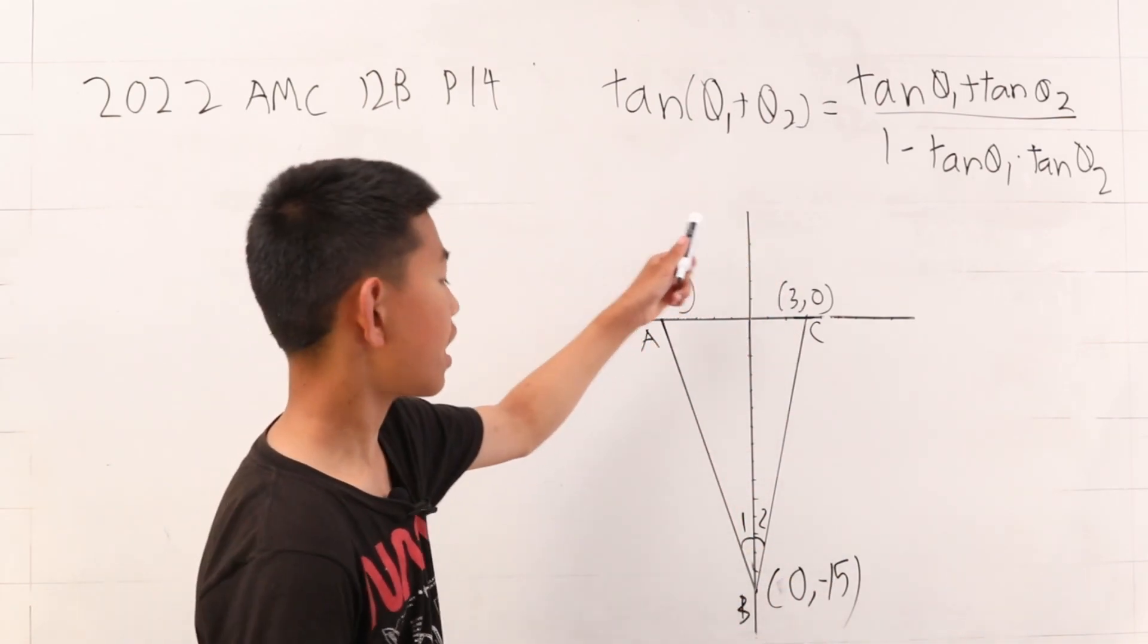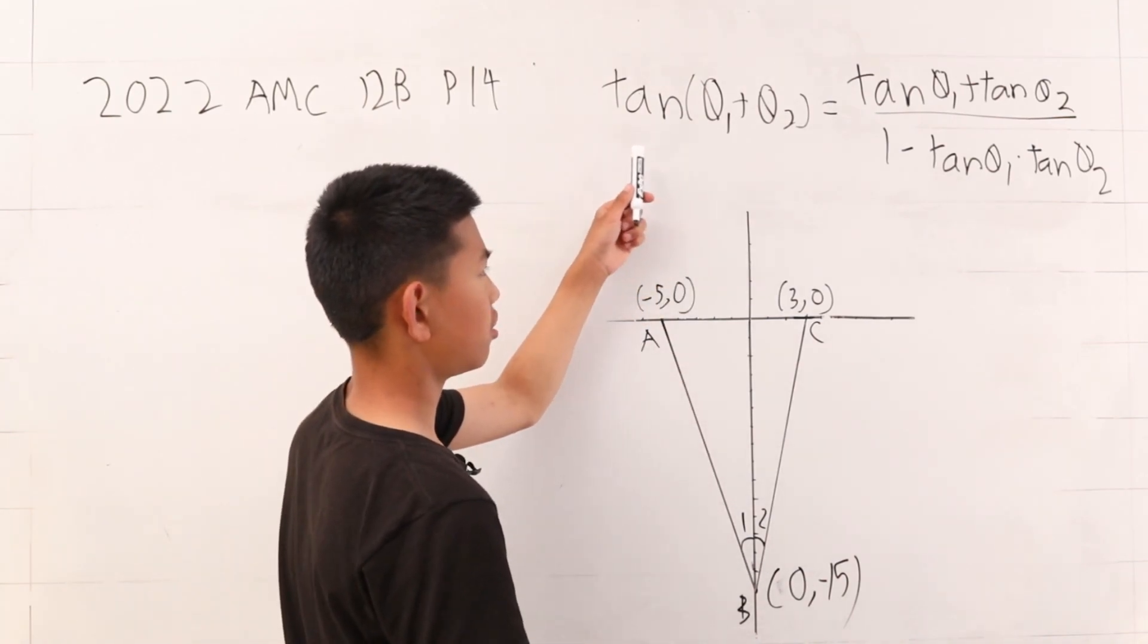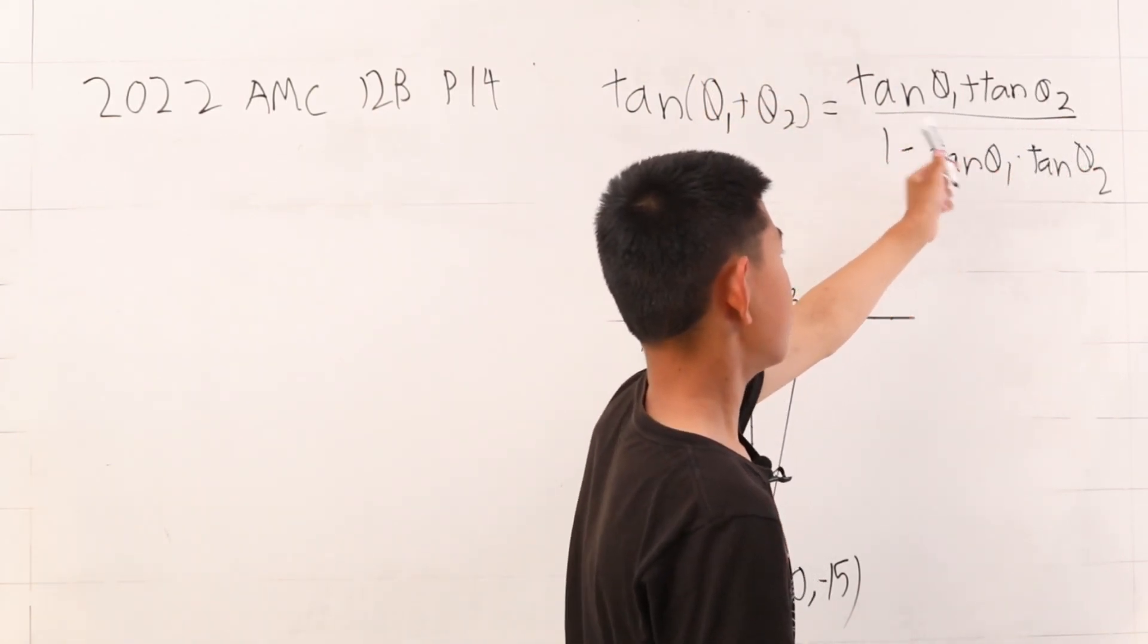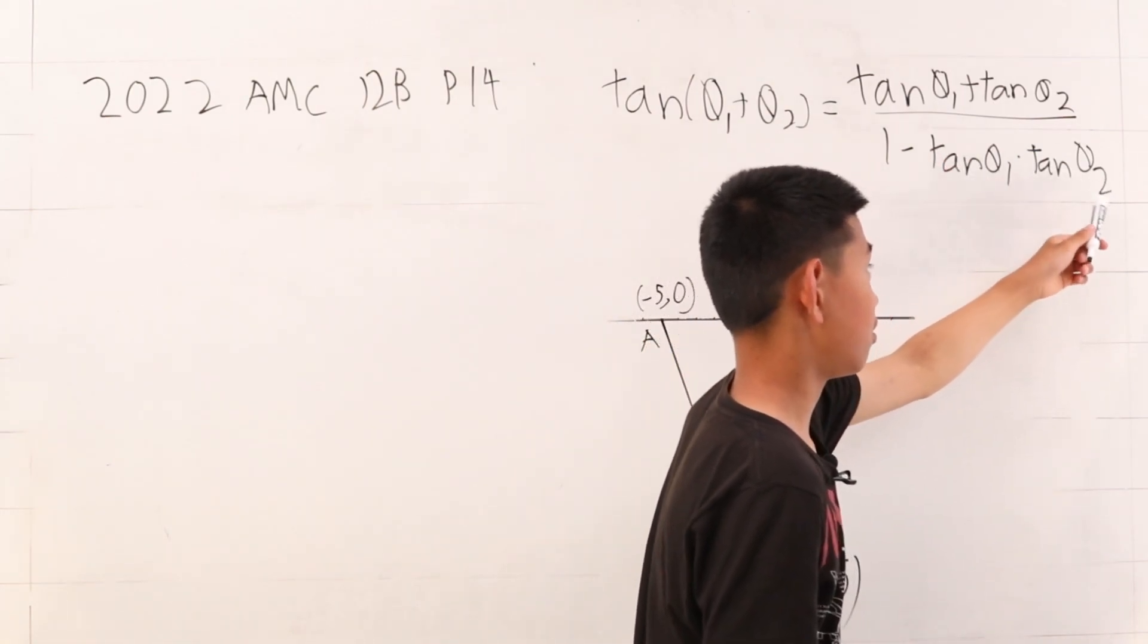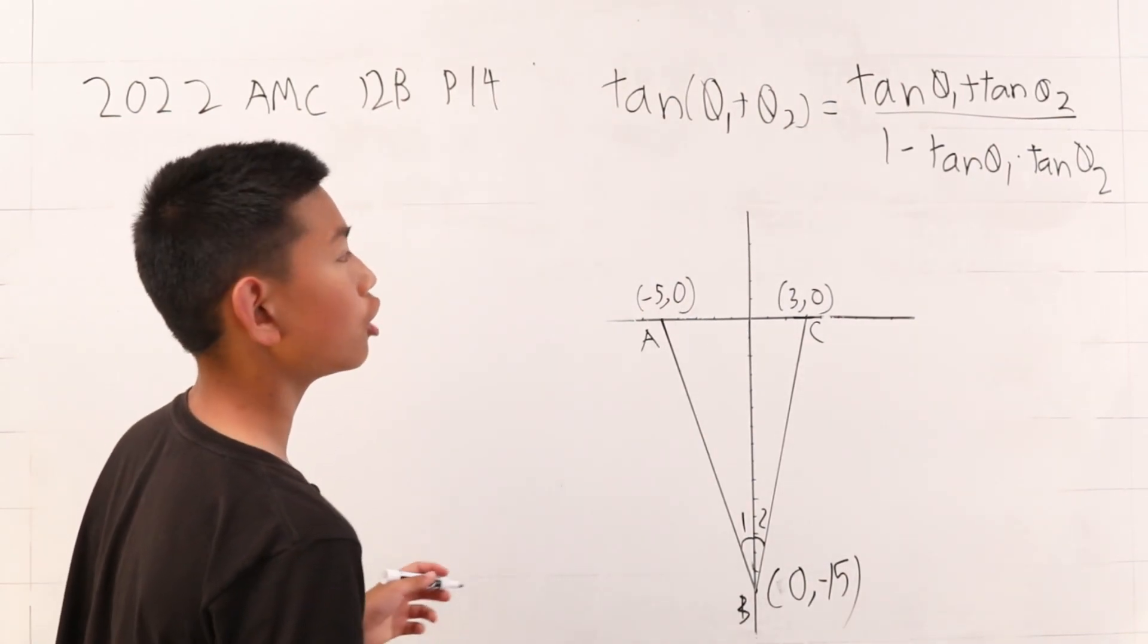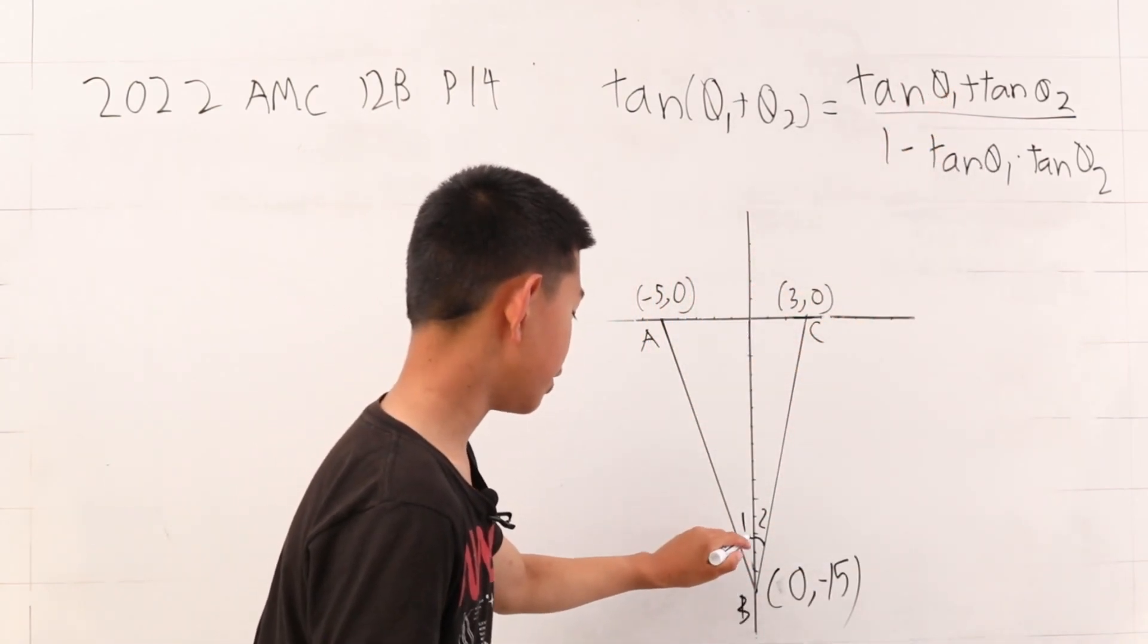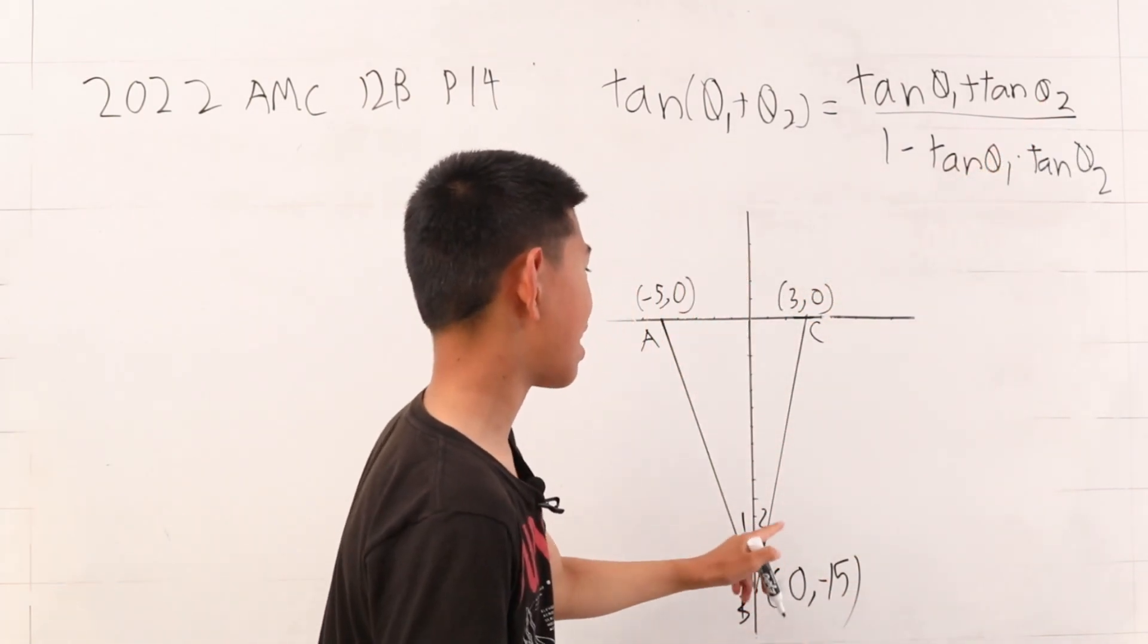Now, we have this pretty handy formula because we want to find the tangent and it says that the tangent of one angle plus another is the tangent of the first angle plus the second angle divided by 1 minus tangent of the first angle times tangent of the second angle. So, I'm just going to make this seem a lot simpler. We let tangent of angle 1 be equal to this left angle and tangent of angle 2 be equal to the right angle.